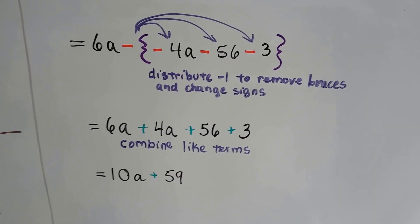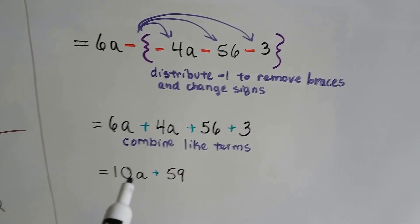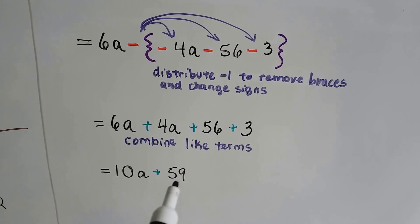We combine like terms. 6a and 4a makes 10a. 56 and 3 makes 59. And our final answer is 10a plus 59.